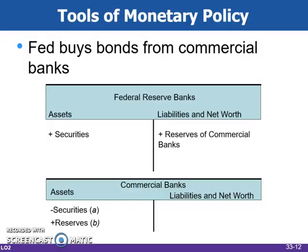If they purchase the bonds from the commercial banks, the commercial banks are in effect transferring part of their holding of securities to the Fed, which creates new reserves for the banks and their accounts at the Fed. By increasing the commercial bank's reserves, the Fed has increased their lending capacity.